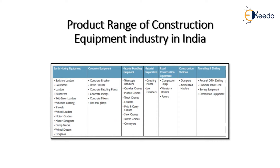These are the product ranges of the construction equipment industry in India. Under earth moving equipment, we have loaders, excavators, bulldozers, scrapers, and dump trucks. Some of these machines may already be familiar to you, while others we will study in detail. Under concrete equipment, we have concrete breakers, pumps, batching plants, and mixers.